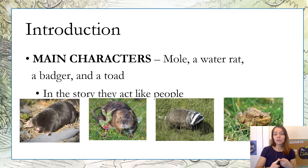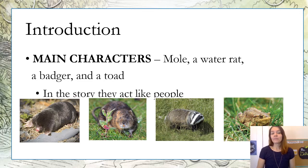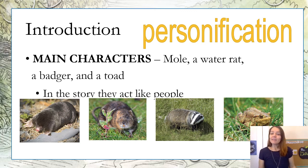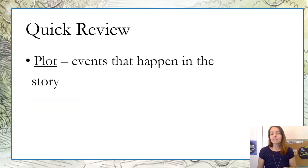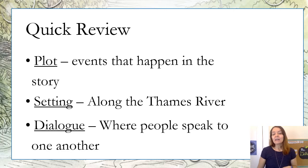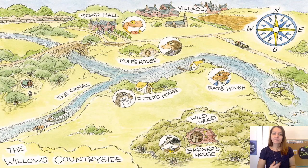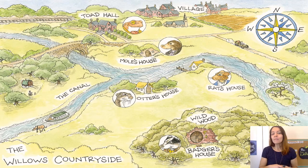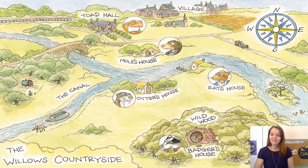In our story, the main characters are Mole, a Water Rat, a Badger, and a Toad, and in this story they act like people — that's personification. Before we get started, a quick review: plot is the events that happen in the story; setting is along the River Thames; and dialogue is where people speak to one another. This is the setting of our story in the willows countryside — you can see Toad's Hall, Mole's house, the canal, Otter's house, Rat's house, the wild wood, and Badger's house.